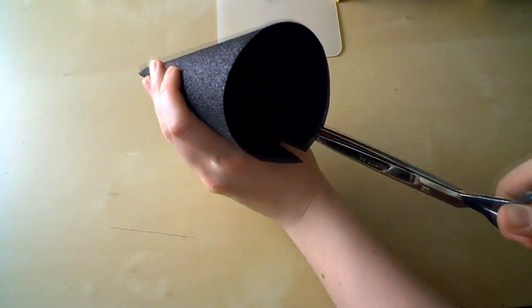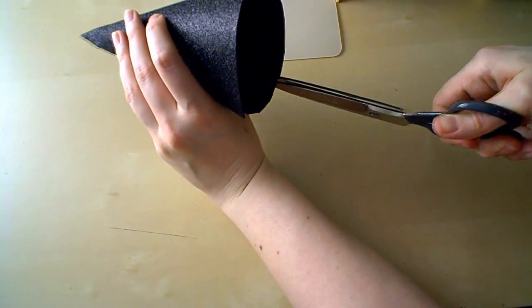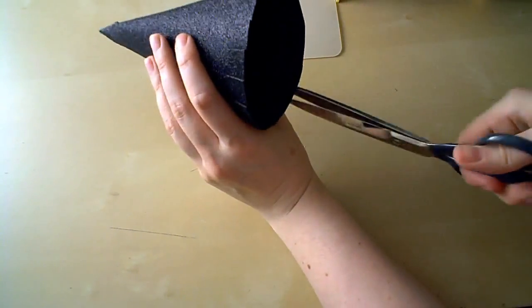Take your cone and making note of where that inside guideline is, clip every half inch or so just up that line, no further. Clip all the way around the edge of the cone.